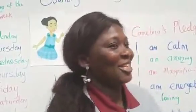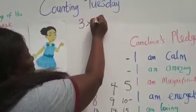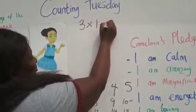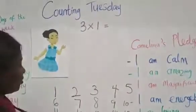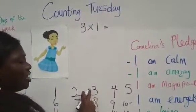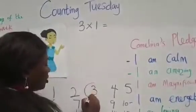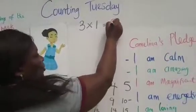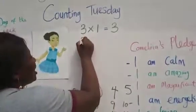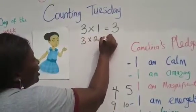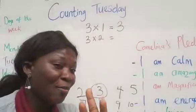We have three times one. Three times one is like three in how many places? One place. So we have our three here, so we write three. Now three times two — what are we going to do? We're going to count three more.